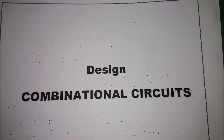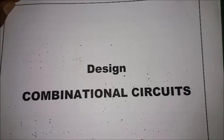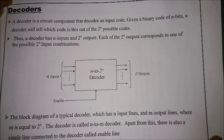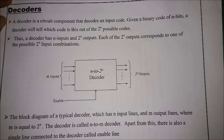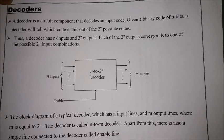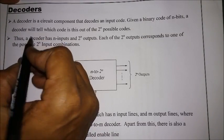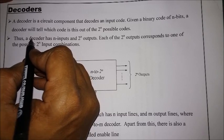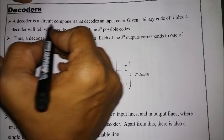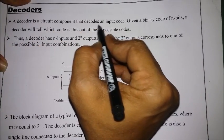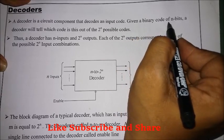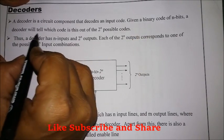Today we will be discussing one of the combinational circuits called a decoder. A decoder is a combinational circuit that decodes a given encoded input. A decoder decodes a given binary code of n bits, telling which code this is out of the 2^n possible codes.